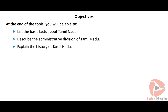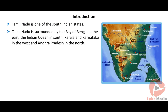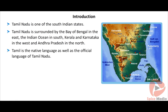Tamil Nadu is located in South India. Tamil Nadu is surrounded by the Bay of Bengal in the east, the Indian Ocean in the south, Kerala and Karnataka in the west, and Andhra Pradesh in the north. Tamil is the native language as well as the official language of Tamil Nadu. Tamil language became the official language of Tamil Nadu on January 14, 1958.